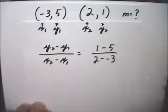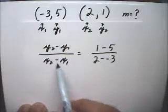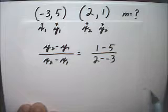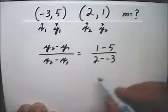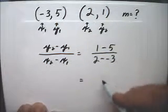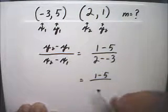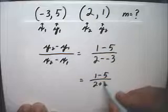Now see how that became a minus 3 there. The first minus or one of the minuses is from here and the other minus is from there. So now 2 minus a minus 3, that's the same thing as 2 plus 3.